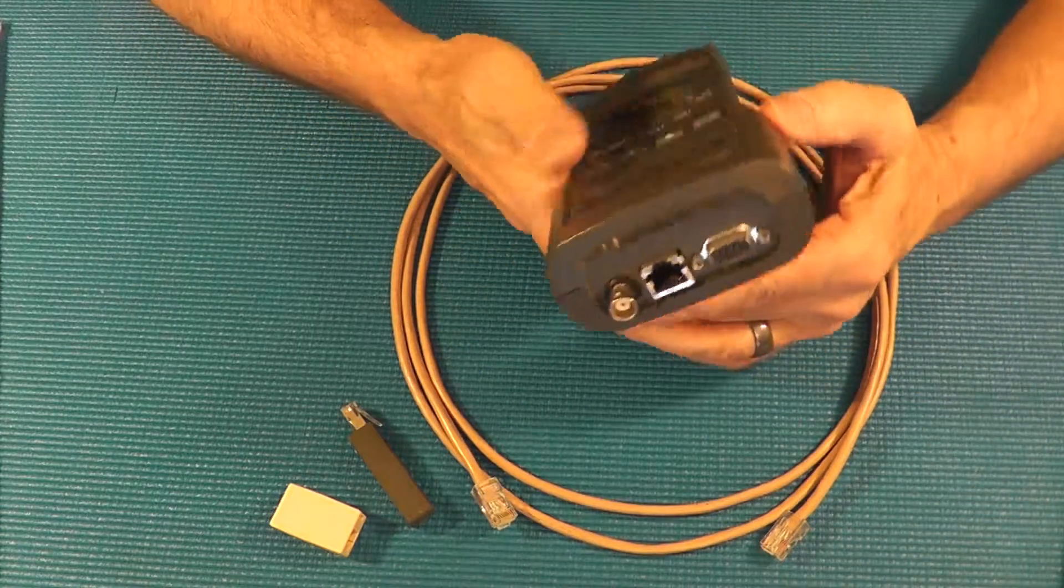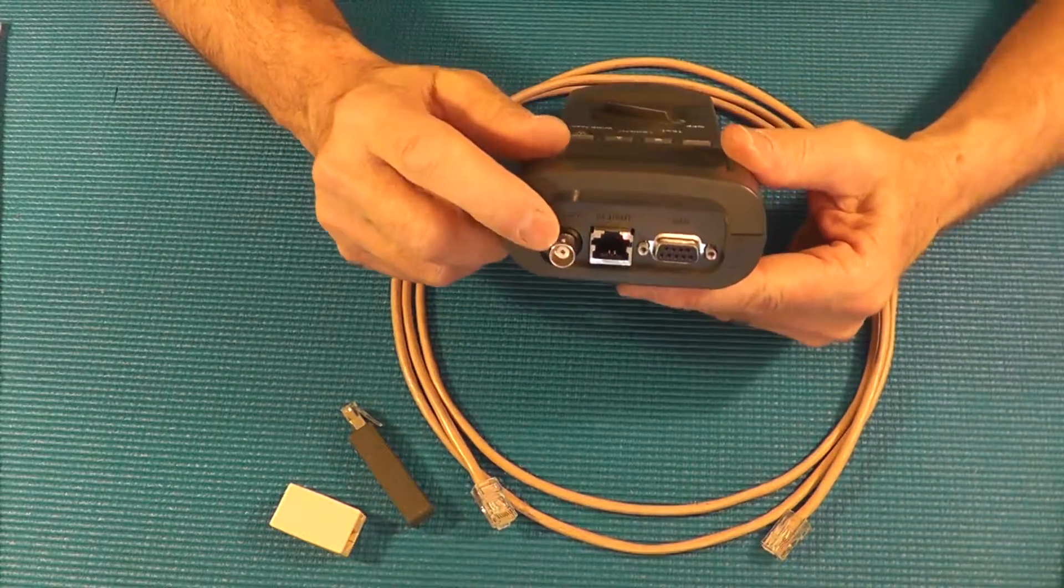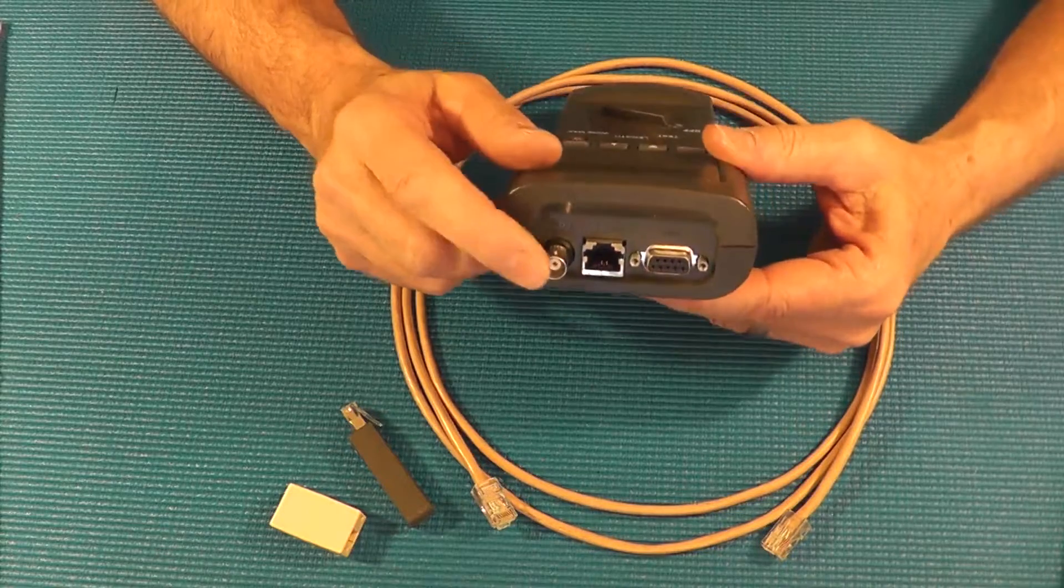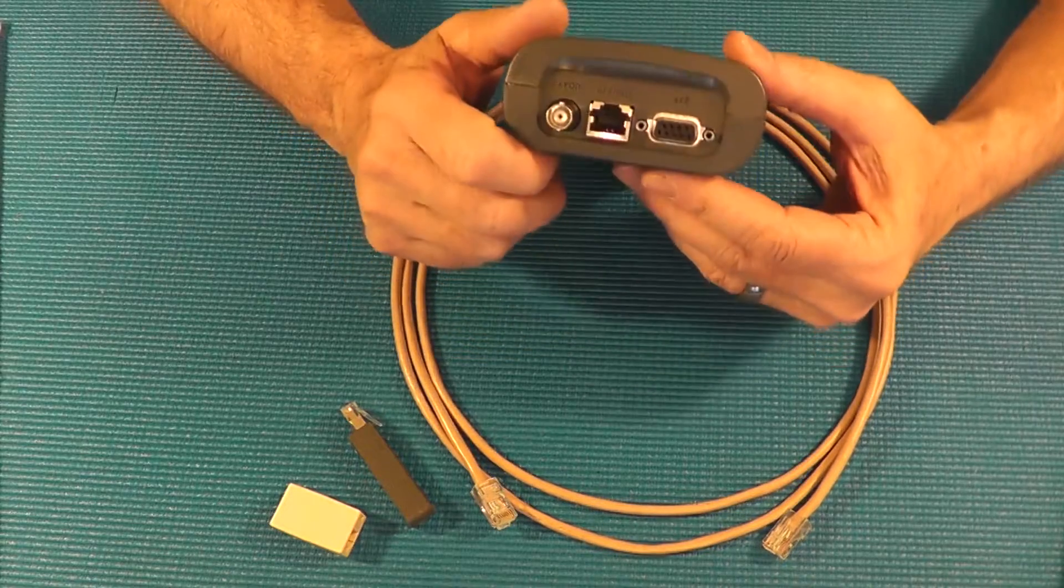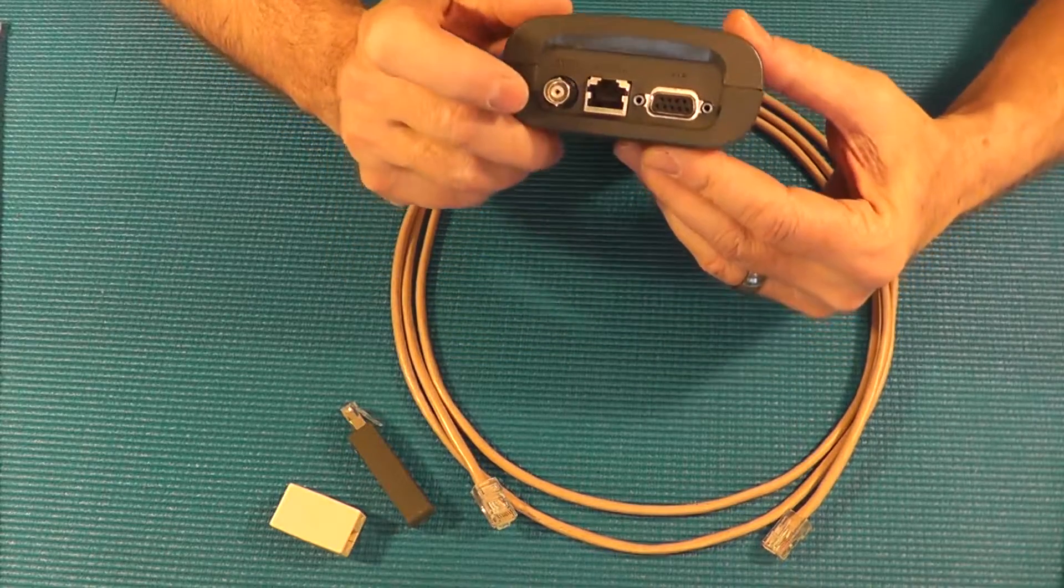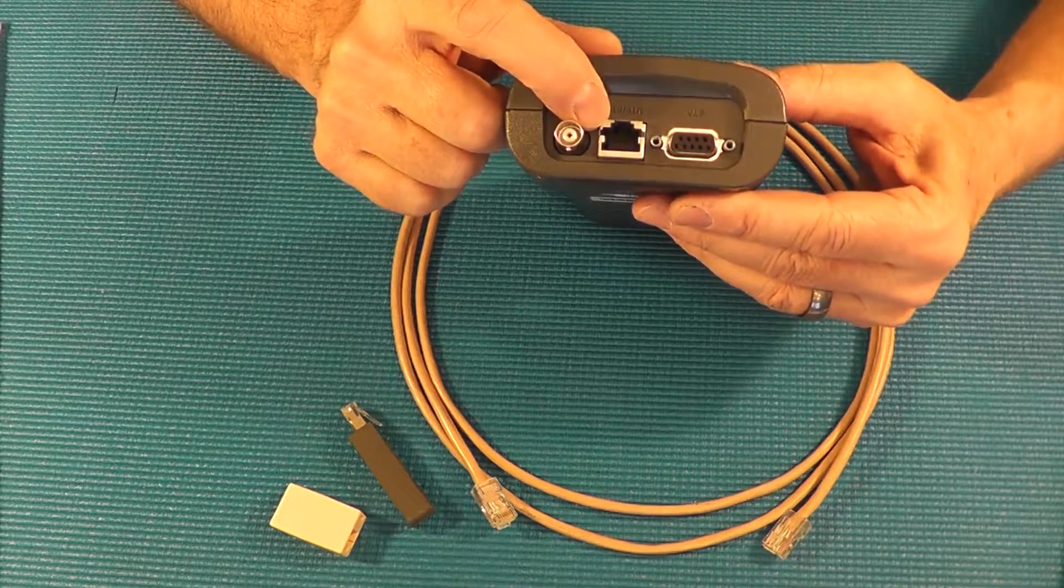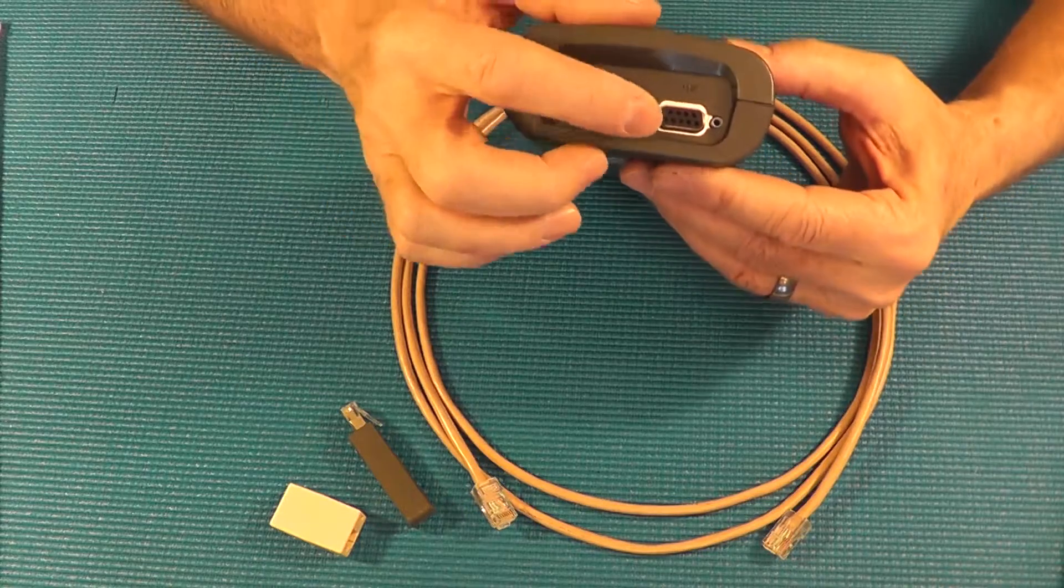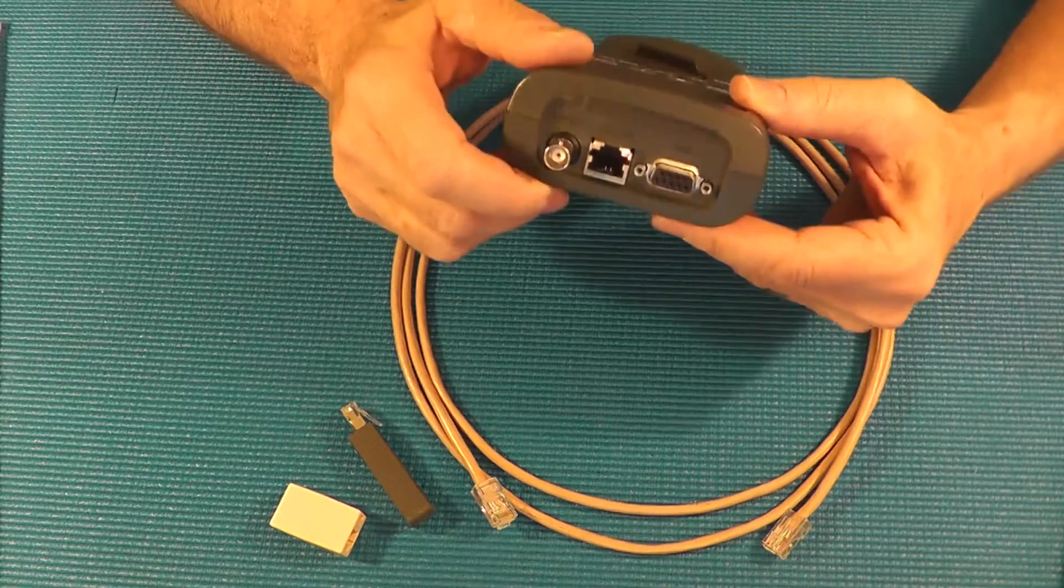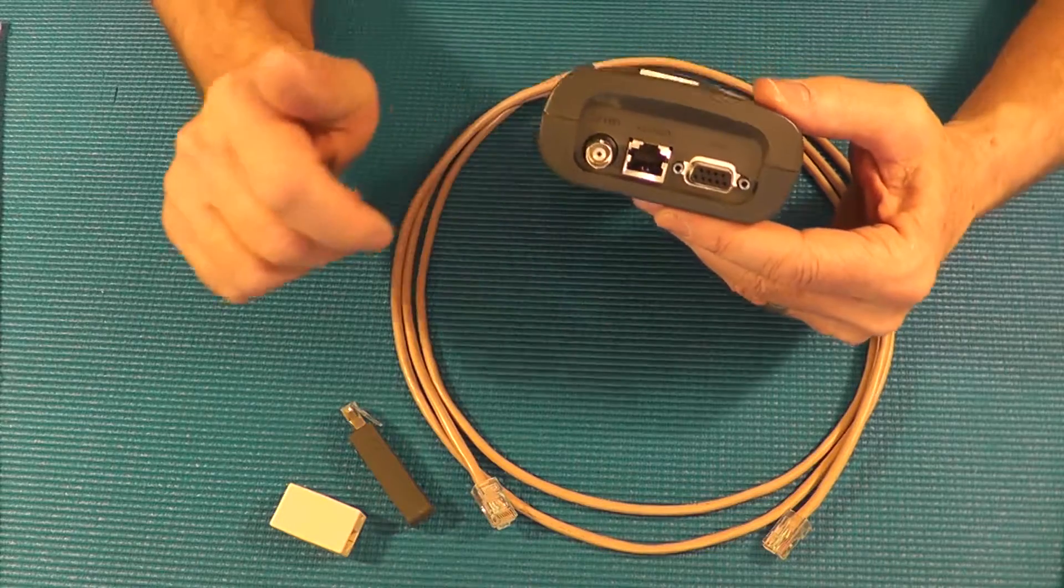All right same thing on the end here you can see there's a BNC type connector for coax. That's for the older 10 base 2, 10 base 5 network testing. There is a port for UTP which is what we're going to use. And over here a serial connection for testing certain kinds of STP cable.